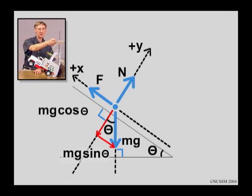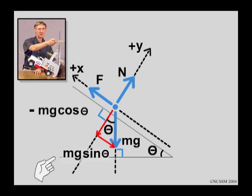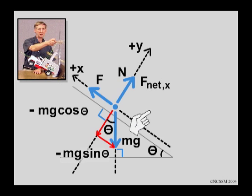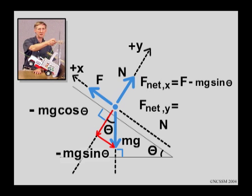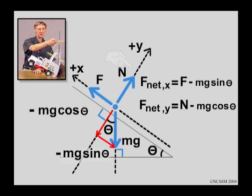Both of those components are in the negative direction. mg cosine theta is in the negative y direction, and mg sine theta is in the negative x direction. The net force equation along the x-axis is: F minus mg sine theta equals zero. The net force equation along the y-axis is: n minus mg cosine theta equals zero. Those two equations allow us to complete the analysis of this situation.